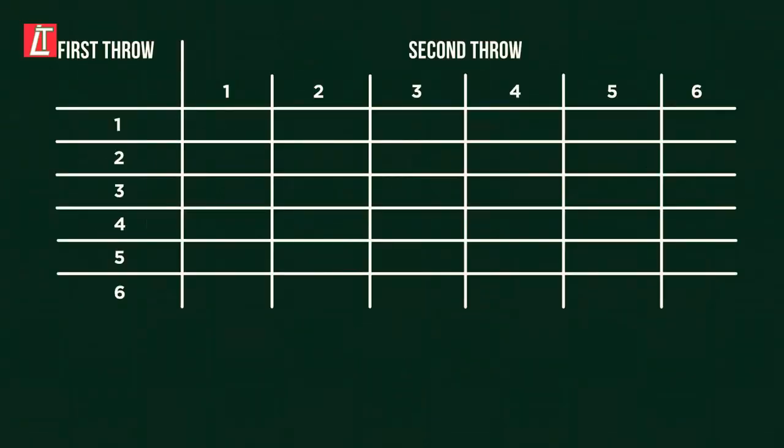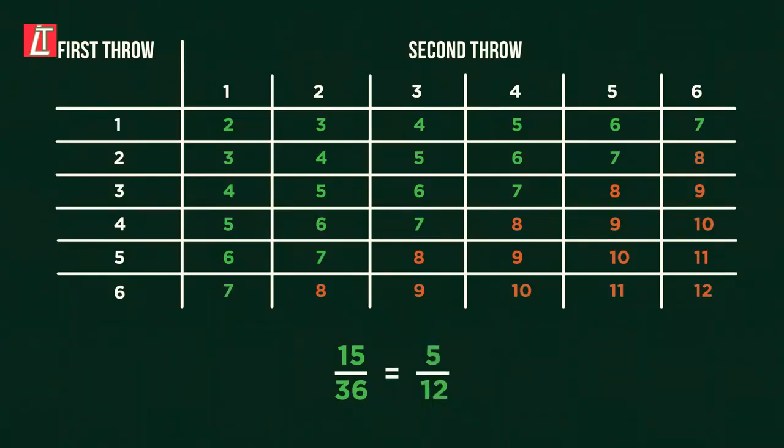Again, we can use this sample space, this time to list the sum of outcomes of the two events. When we add in the sum values and highlight the answers larger than 7, we can see that there are 15 outcomes that work. 15 out of 36 potential outcomes leaves us with the probability 5 over 12 when simplified.